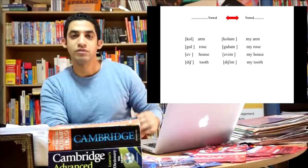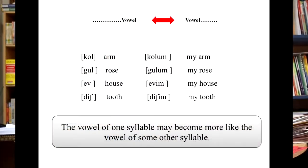The last example of assimilation process is taken from Turkish language. In Turkish, we can find a vowel assimilates another vowel. As you can see in this example, the vowel of one syllable may become more like the vowel of some other syllable. Look here for the word arm, which is kol. If you want to say my arm, you say kolom. Same thing for rose, which is gül. If you say my rose, you have to say gülüm. The added morpheme has one vowel that affects the first vowel in the first syllable, and they become very similar.